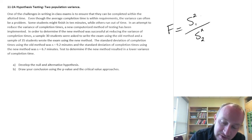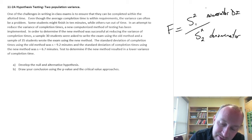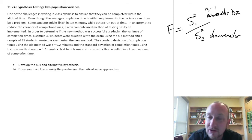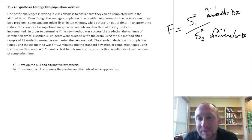We have numerator degrees of freedom and we have denominator degrees of freedom. This will be n1 minus 1 numerator degrees of freedom, and n2 minus 1 denominator degrees of freedom.